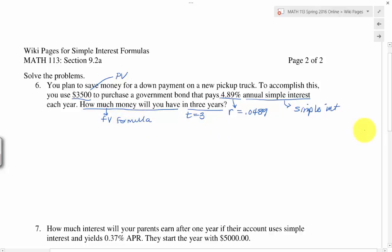So of the two formulas that I have, I don't need to calculate just the interest part. I need to find the total amount in the account. So first thing on every problem that you work on a wiki page, I want to see your formula that you chose to use.